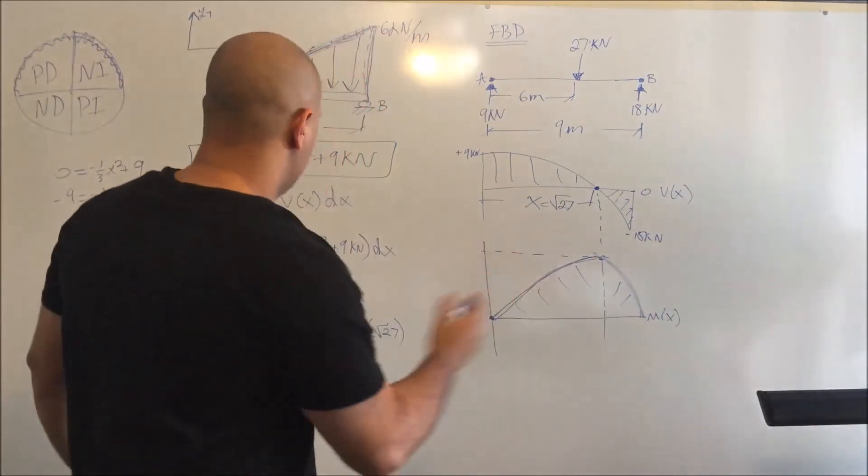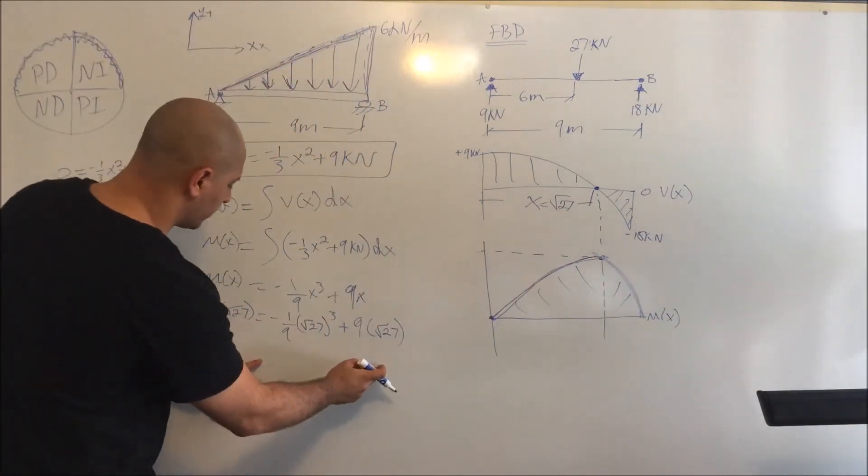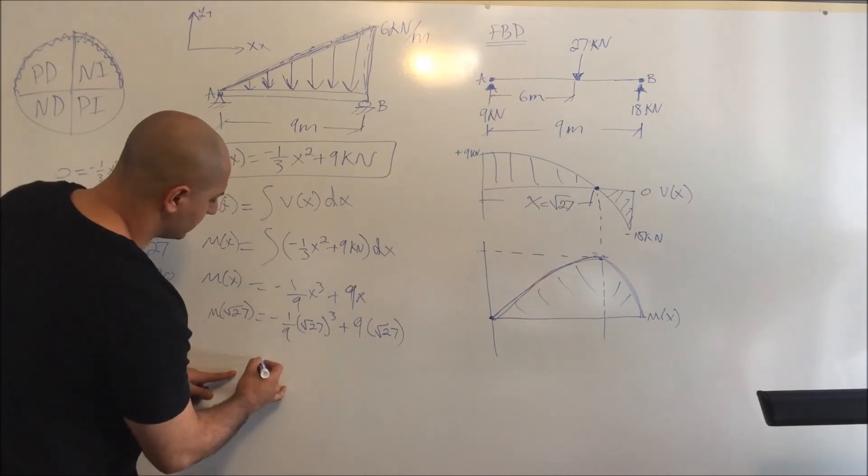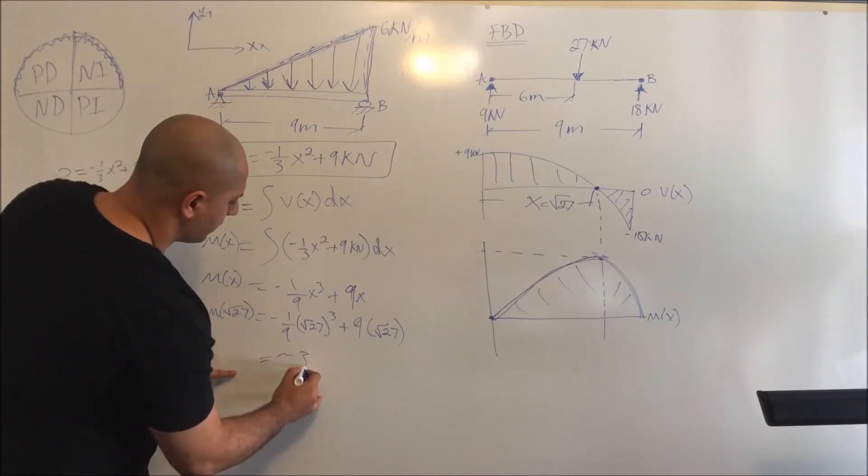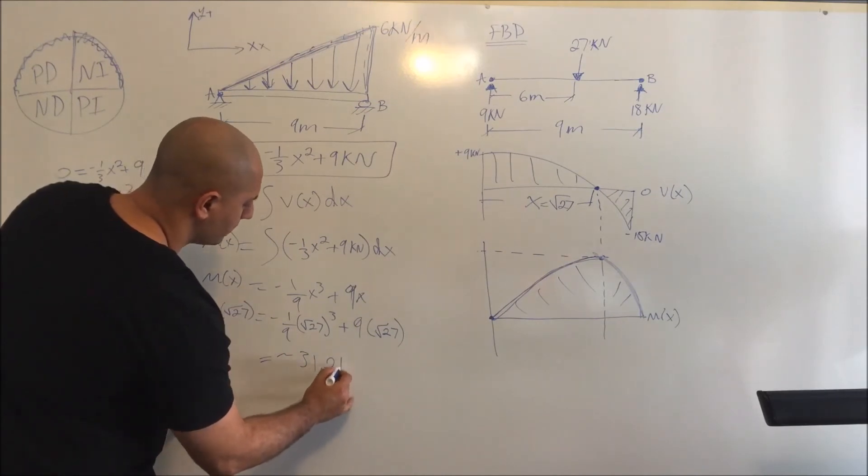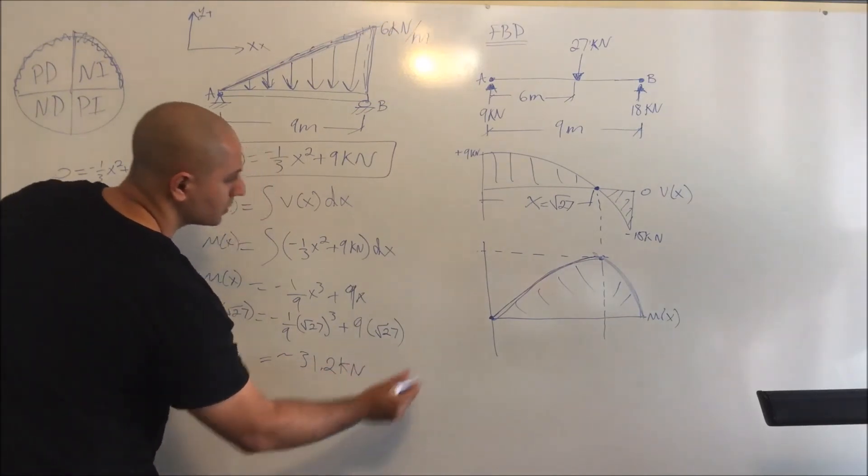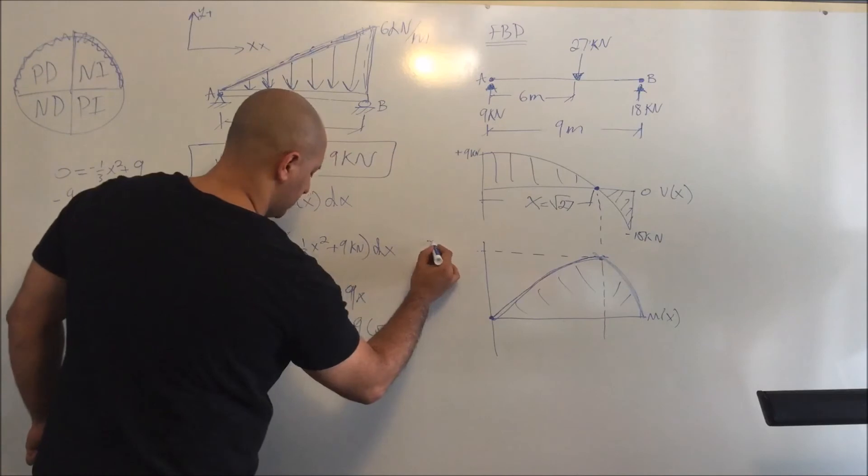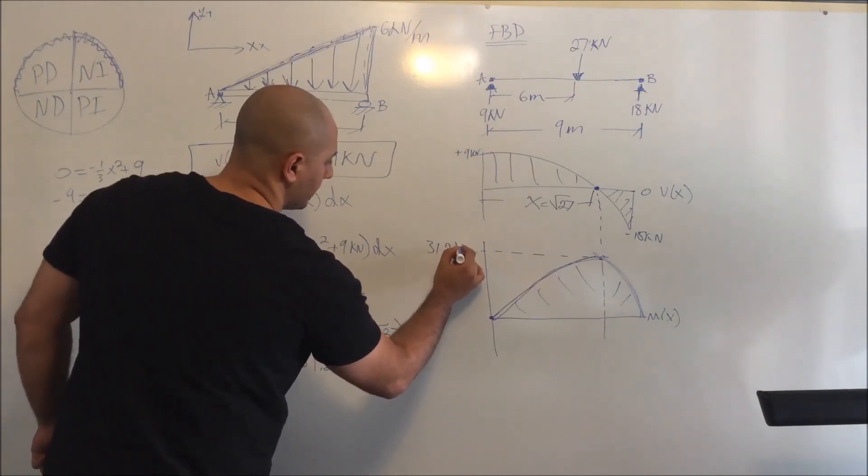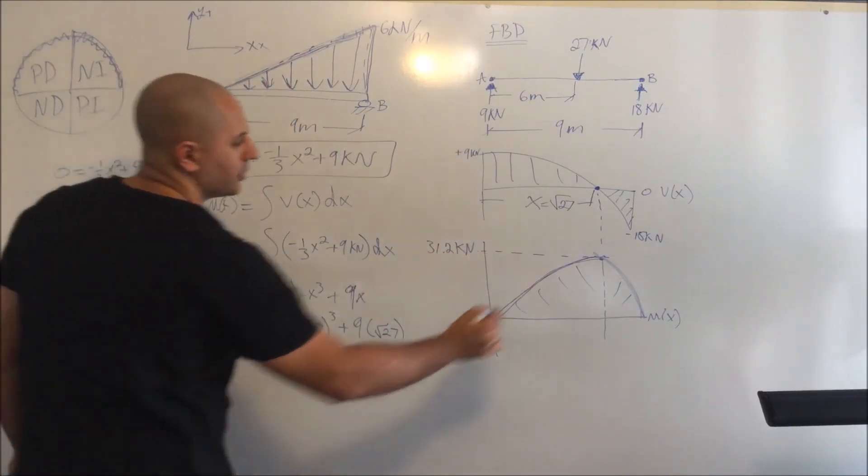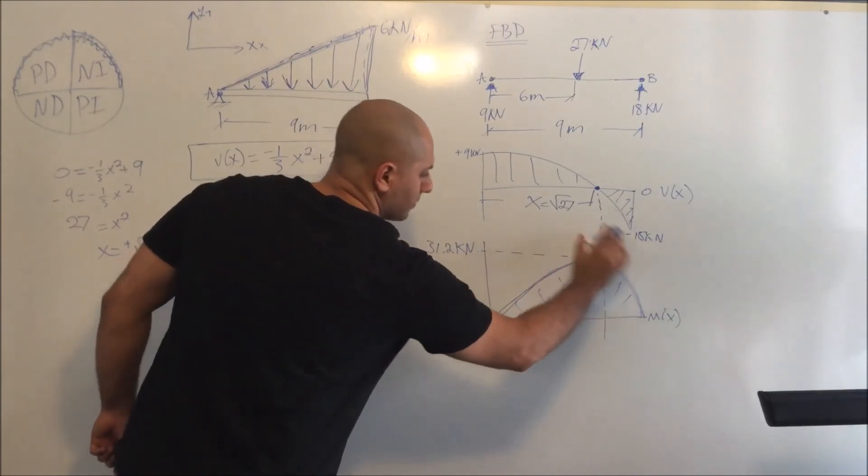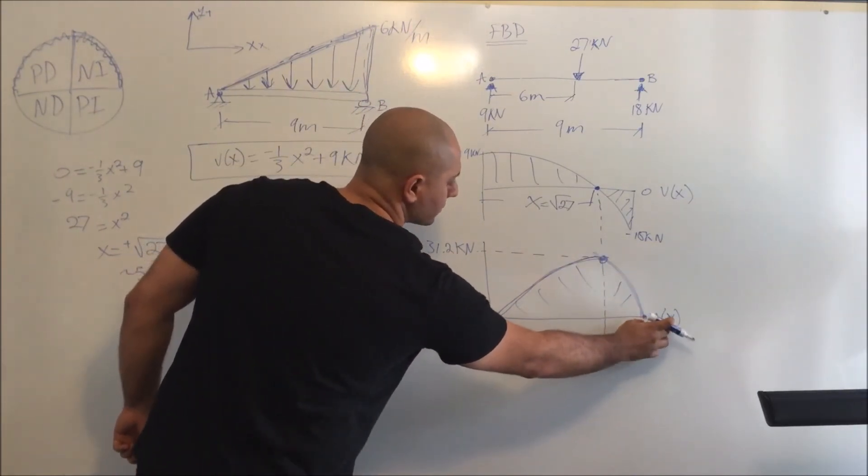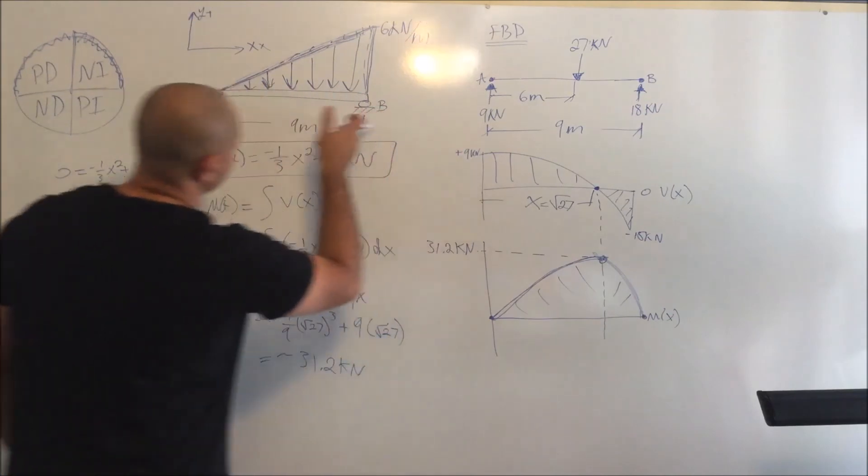All right, just in case you wanted to know what the answer here is, basically once you solve this you should have roughly 31.2 kilonewtons. So this point right here, your maximum is 31.2 kilonewtons. If you wanted to know how we figured it out, obviously all you have to do is plug in for x equals 9. This is your total distance.